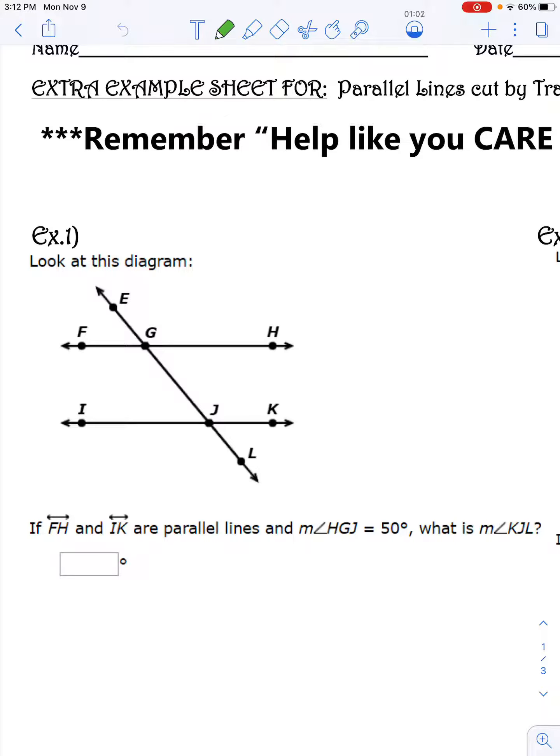First let's highlight HGJ. We start with H, then go to G, and then to J.